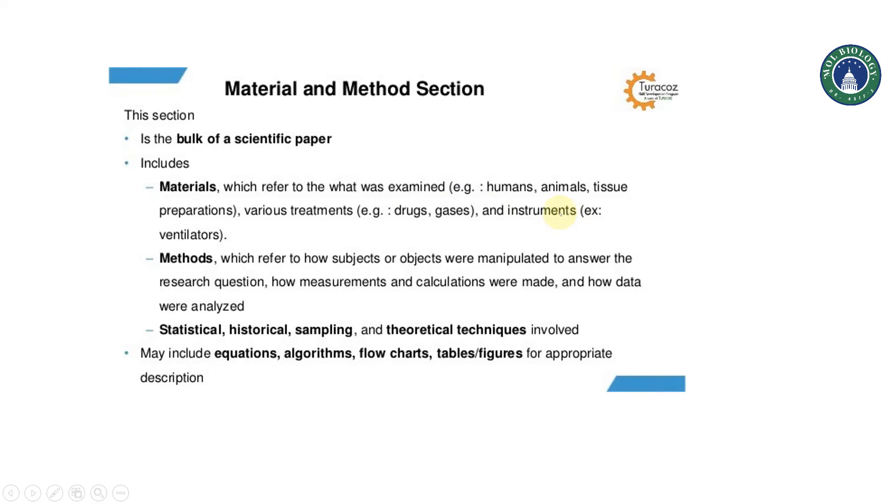What you have examined, like humans, animals, tissue preparation - all you can give your details of materials whatever you are using according to your own experiment. And in the method section I have already mentioned that you have to refer how subjects and objects were manipulated to answer your research question, like how the calculations were made, how the data was analyzed. This can be done in method section.